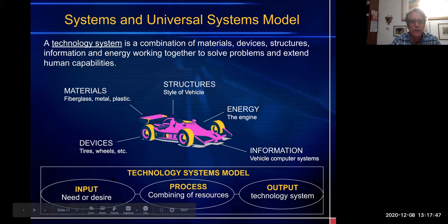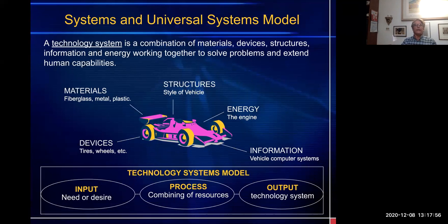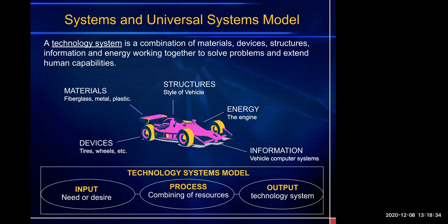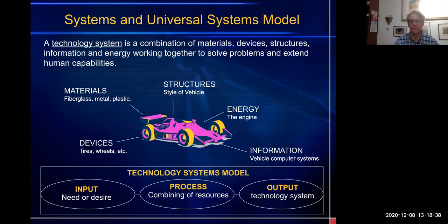What is the technology system of a Formula One car doing to extend human capabilities? What is it allowing us to do? How is it extending our human capability? Jeremiah, what does a Formula One car do for me? Makes you go faster. It allows me to go fast — I want to go fast. So I buy myself a technological system in the form of a Formula One car. That is what Formula One cars are facilitating: going fast. We as humans can go fast when we run, but we can't run like a Formula One car.